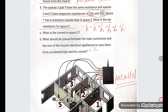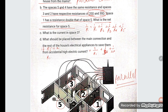Space 5 and 4 have the same resistance. Space 3 and 2 have respective resistances of 20 and 30 ohms. Space 1 has resistance double that of space 5. So if R5 = x, then R1 = 2x. Since space 4 has the same resistance as space 5, R4 = x as well.